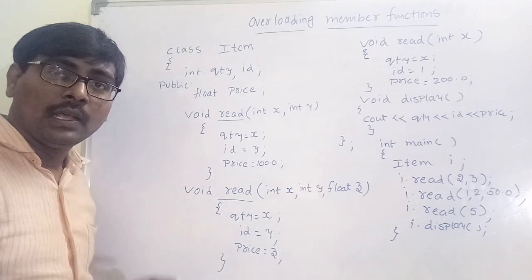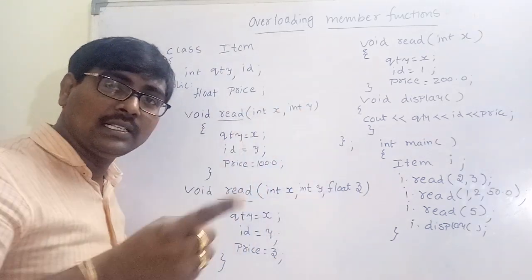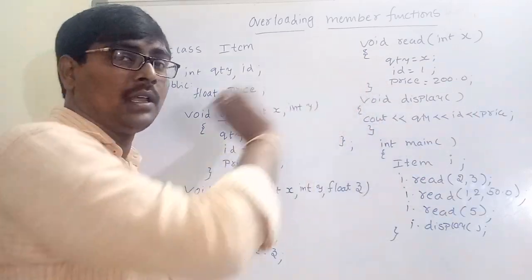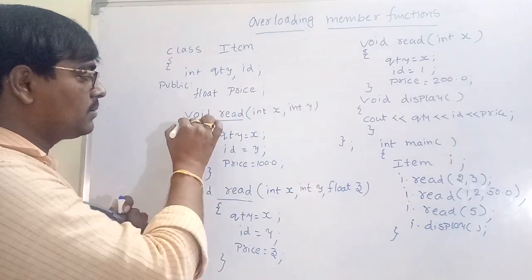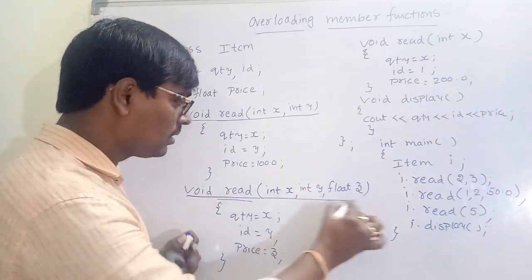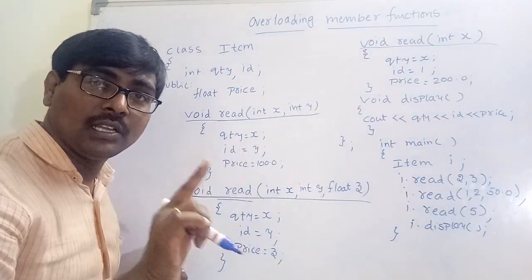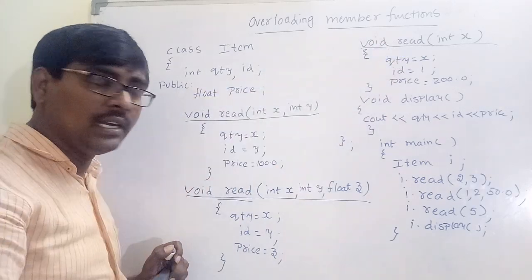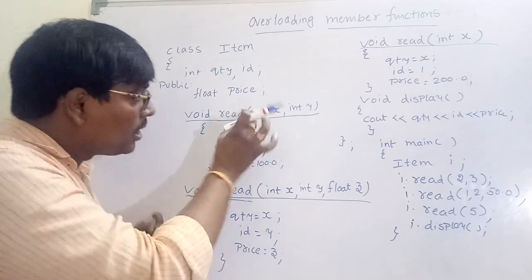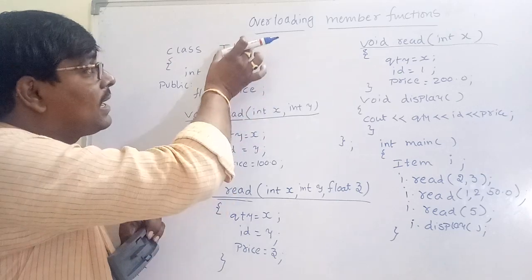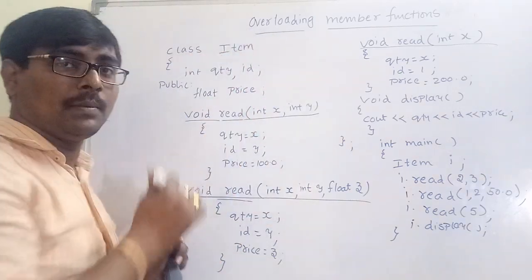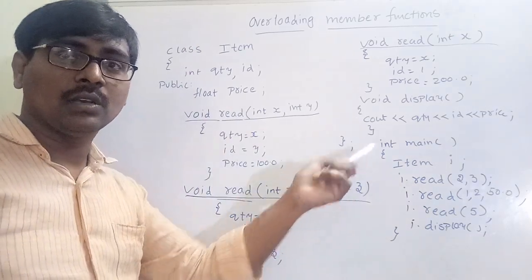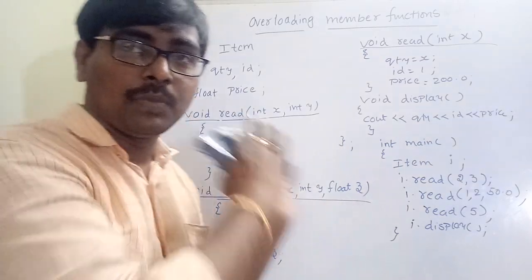One more point: functions can be overloaded both inside and outside the class. Inside the class, write only the declarations ending with semicolons. Outside the class, write the complete definition with the class name, scope resolution operator, and the member function name — for example, `item::read(...)`. The same concept of defining member functions outside the class applies here as well.